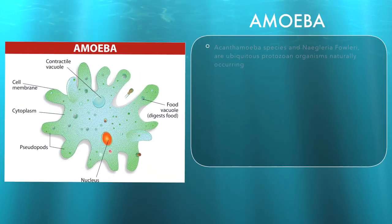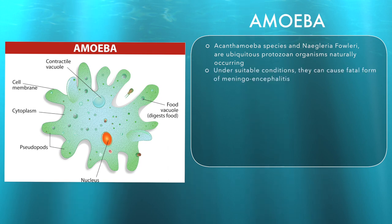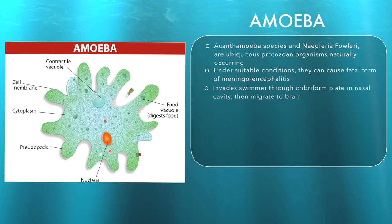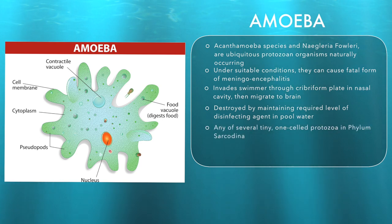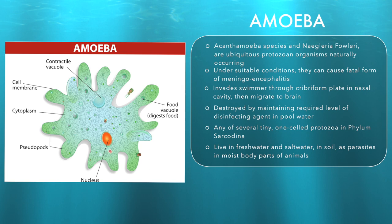Acanthamoeba species and Naegleria fowleri are ubiquitous protozoan organisms naturally occurring within the environment. Under suitable conditions, such as those found in poorly maintained pool water, they can cause a fatal form of meningoencephalitis. These protozoa invade the swimmer through the cribriform plate in the nasal cavity and then migrate to the brain. They are readily destroyed by maintaining the required level of disinfecting agent within the pool water. An amoeba is any of several tiny one-celled protozoa in the phylum Sarcodina. Amoebas live in freshwater and saltwater, in soil and as parasites in moist body parts of animals.